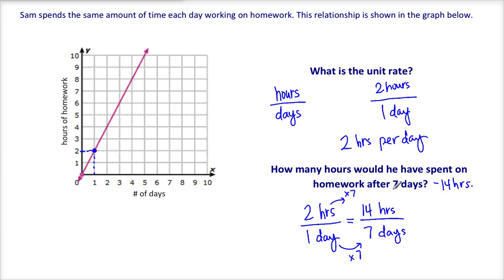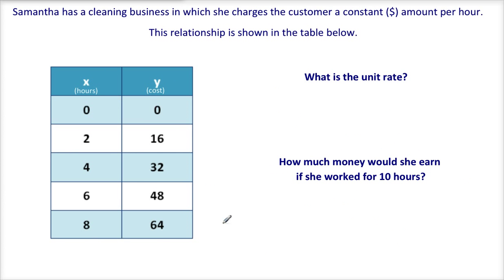Okay, notice that we just multiplied by the unit rate. Seven times two gave us fourteen. Okay, let's look at the same types of questions, but this time with a table.